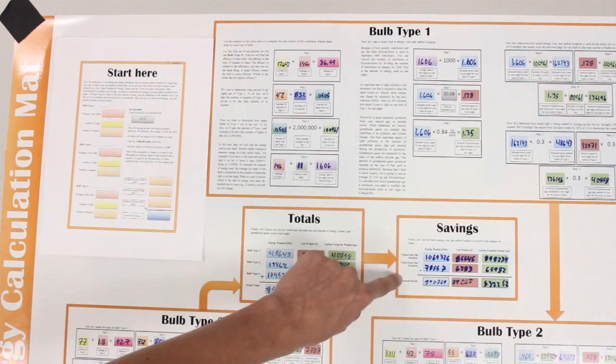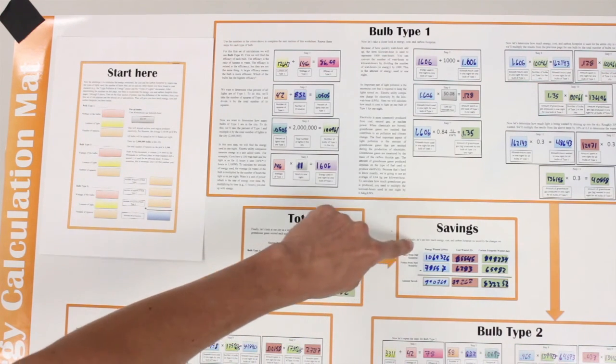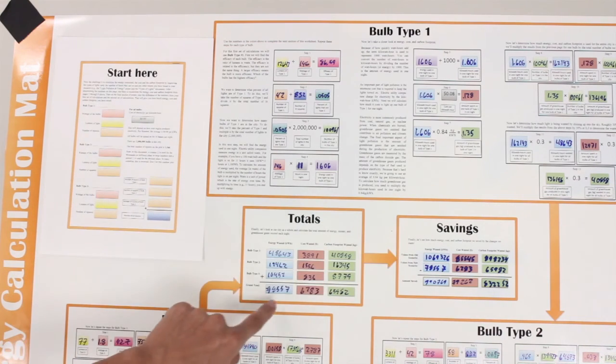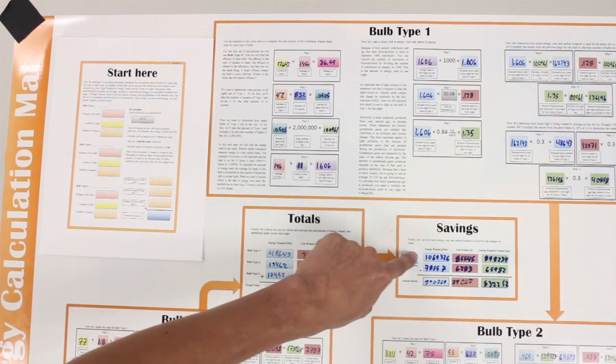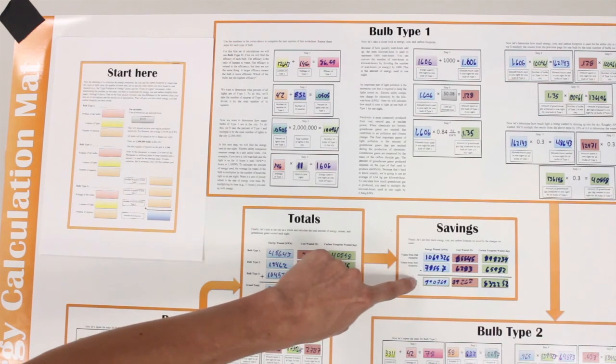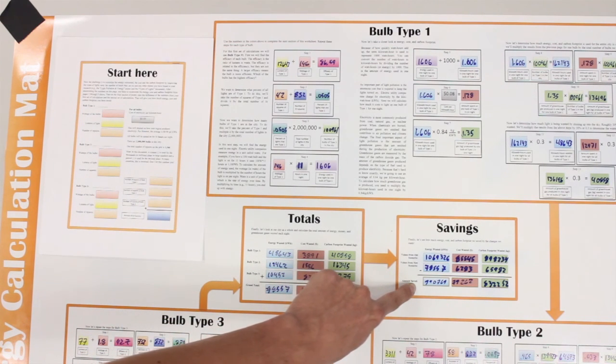Now, from the previous side of the poster, take the old values that you had in these squares. Put them here and subtract to get the total amount saved by switching light bulbs.